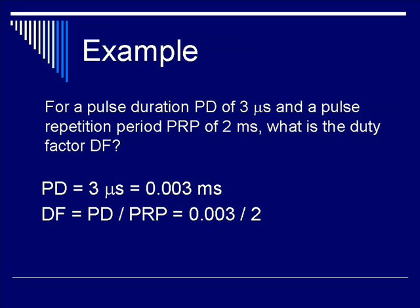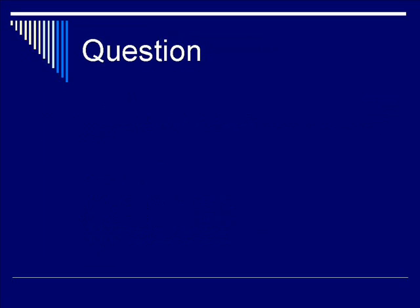Duty factor is therefore PD (0.003 milliseconds) divided by PRP (2 milliseconds). This simple ratio gives a DF of 0.0015, which can also be written as a percentage by multiplying by 100, giving 0.15% as the duty factor — which is in the range mentioned earlier.